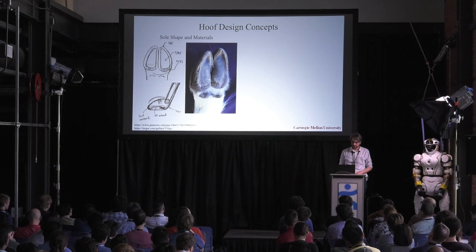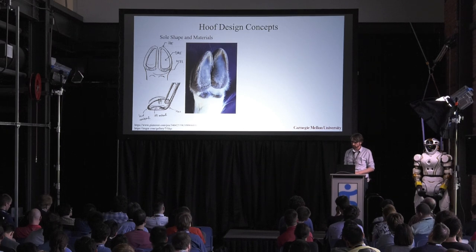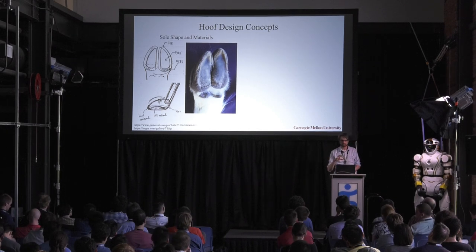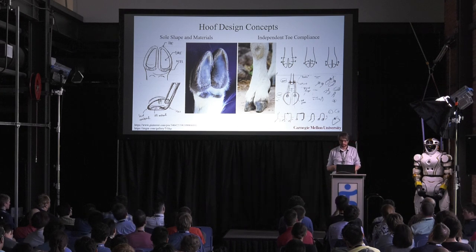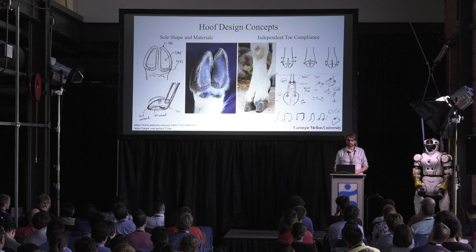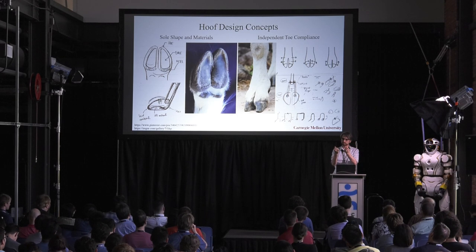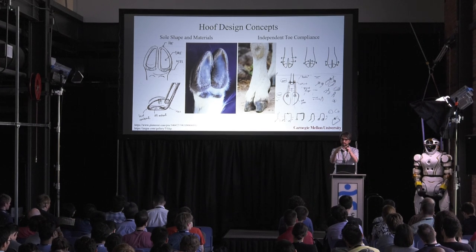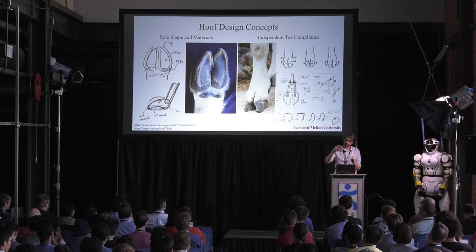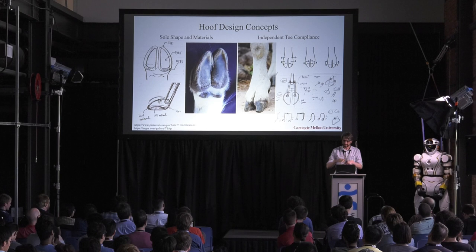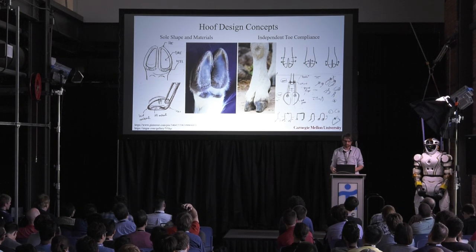The other thing that really helps these animals on rocks is their independent toes. They're two-toed animals with interesting stiffness and compliance properties. The two toes can move both translationally and rotationally relative to each other, allowing them to grab onto different features without actively adjusting them to match exact terrain.